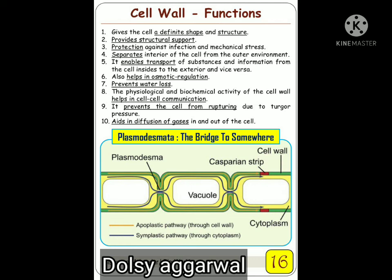The cell wall prevents the cell from rupturing due to turgor pressure. If endosmosis is occurring in a cell — meaning water is moving inside — the cell wall applies internal pressure to prevent excessive expansion. This pressure is called turgor pressure. The cell wall also aids in diffusion of gases in and out of the cell. In the cell wall, there is a structure called plasmodesmata, which connects two cells. There are two types of movement seen in cells: one is cell wall to cell wall, which is the apoplastic type of movement; the other occurs through the cytoplasm, which is the symplastic type of movement.